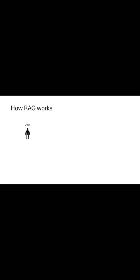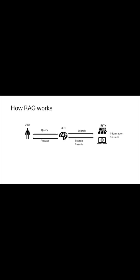Let us see how RAG works. A user sends a query to an LLM. The LLM for some reason doesn't know the answer. Rather than hallucinating and guessing, it searches the sources of information that it has — it may be an internal source, it may be searching over the internet, or it may be a policy document. It gets certain results, analyzes those results, prepares a very good answer, and sends you the final answer. That's how RAG works.